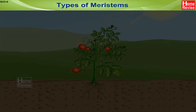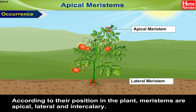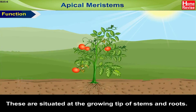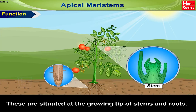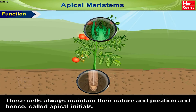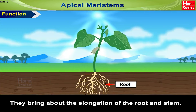Types of meristems: Apical meristems. According to their position in the plant, meristems are apical, lateral, and intercalary. Apical meristems are situated at the growing tip of stems and roots. These cells always maintain their nature and position and are hence called apical initials. They bring about the elongation of the root and stem.